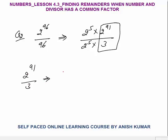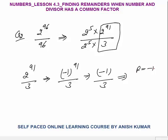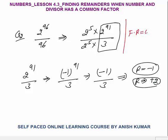Now 2 by 3 gives remainder minus 1, so we have minus 1 power 91 by 3. Minus 1 to an odd power is minus 1. You know the relation between positive and negative remainder: the magnitude of positive and negative remainder sums to the divisor, so remainder is plus 2. So 2 power 91 divided by 3 gives remainder 2. The final answer is common factor into remainder: 2 power 5 is 32, remainder is 2, so 2 power 6 — that is 64 — is your final answer.